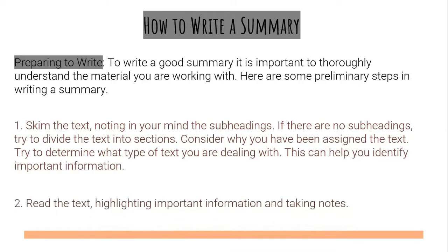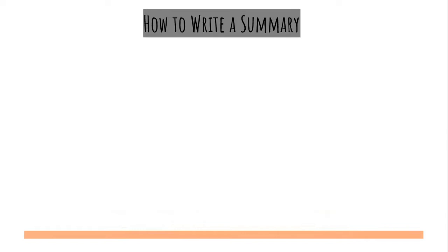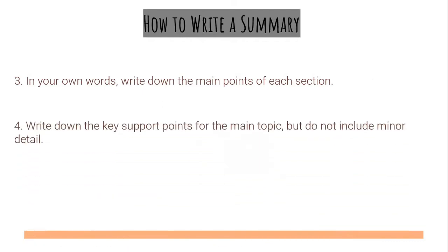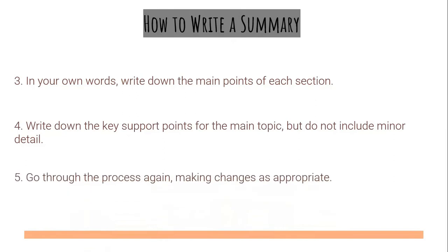Read the text, highlighting important information and taking notes. When you read the text, you may highlight the essential parts. In your own words, write down the main points of each section. You may rephrase or restructure the text, but make sure to maintain the meaning. Write down the key support points for the main topic, but do not include minor details — unless they provide important support to the major details. Go through the process again, making changes as appropriate. Check your work, go through the same process, and polish your work.